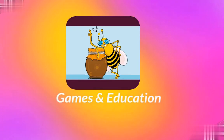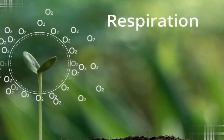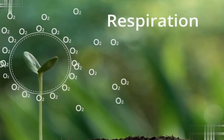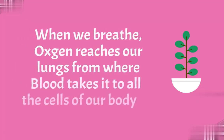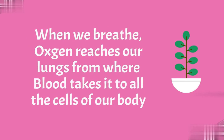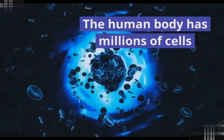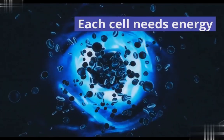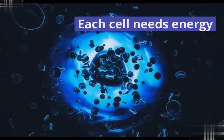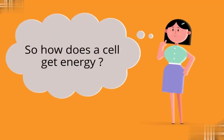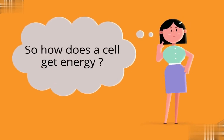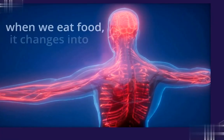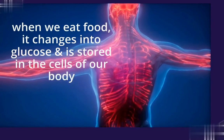Welcome to our channel Game 10 Education. Let's understand respiration. When we breathe, oxygen reaches our lungs, from where blood takes it to all the cells of our body. The human body has millions of cells, and each cell needs energy. So how does the cell get energy? When we eat food, it changes into glucose and is stored in the cells of our body.